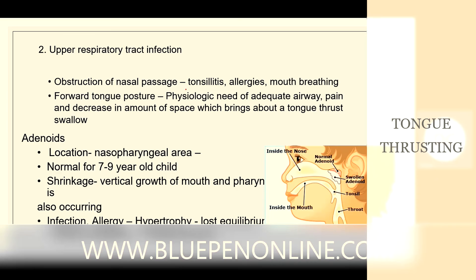In the case of upper respiratory tract infection, obstruction of the nasal passage due to rhinitis, allergies, or mouth breathing habit, or due to forward tongue posture, the physiologic need for an adequate airway and a decrease in the amount of space brings about a tongue thrusting swallow. It can also be due to adenoids, which are normally located in the nasopharyngeal area and are considered normal in 7 to 9-year-old children. Vertical growth of the mouth and pharynx, infection, allergy, and hypertrophy can also result in altered tongue posture.